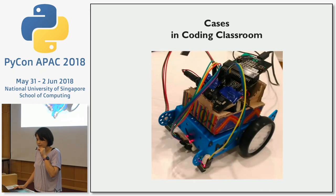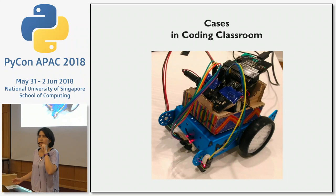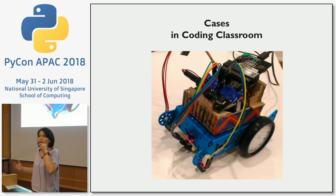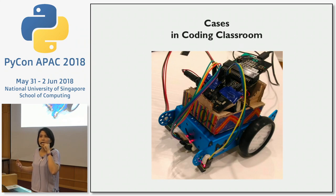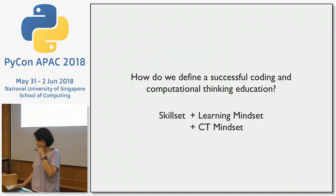One recent classroom case: students who had learned a few things were going for a competition. Suddenly they needed to solve a real problem — not a classroom problem. They had to figure out what to do with the hardware to create a particular robot, what to do with the software, and how to code it in a way that's modular. So we have: skill set plus learning mindset plus CT mindset. And after a while we see we can expand it further.